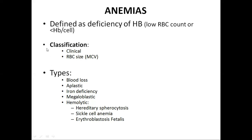Anemia can be classified in two ways. First is the clinical classification, and second is according to the morphology. In morphological classification, we look at the RBC size — for example, MCV. In clinical types, there are various types.